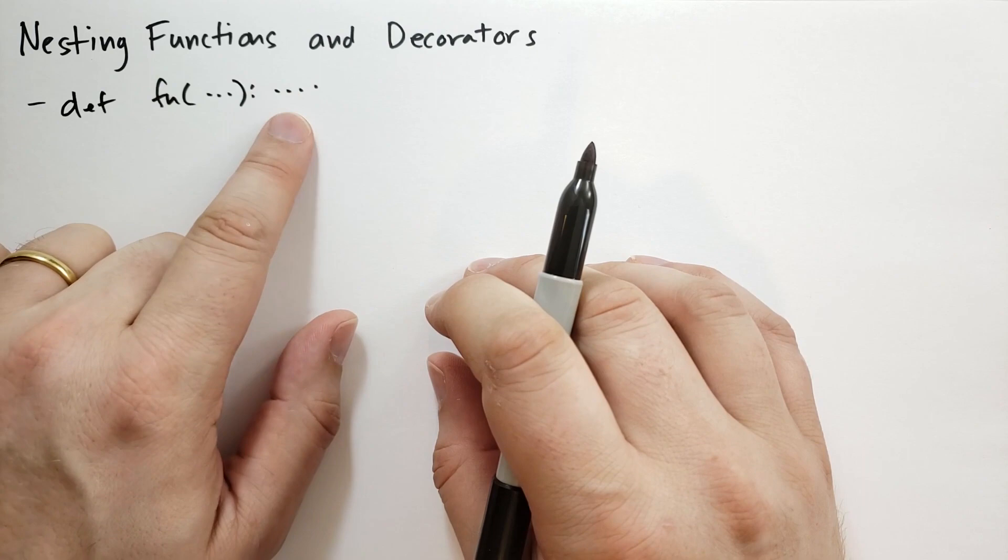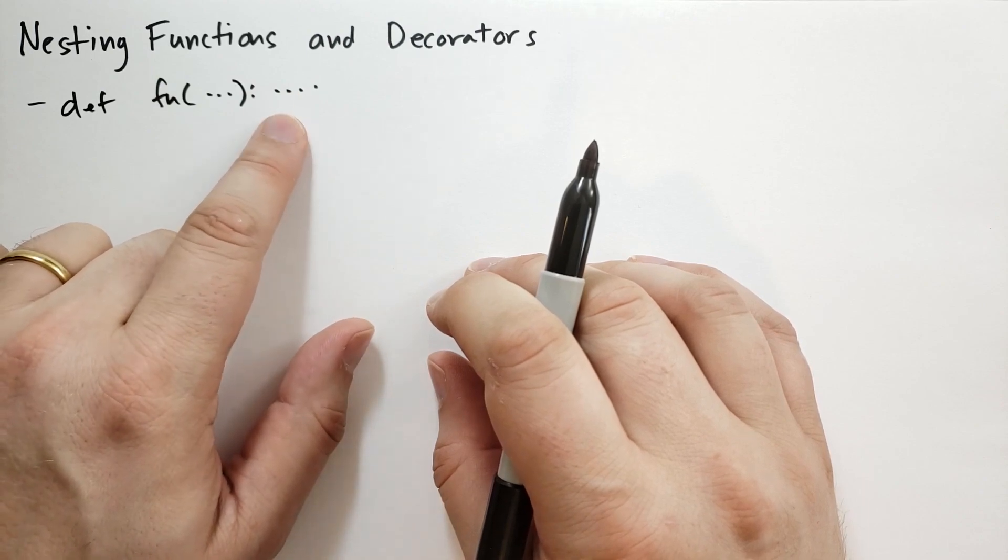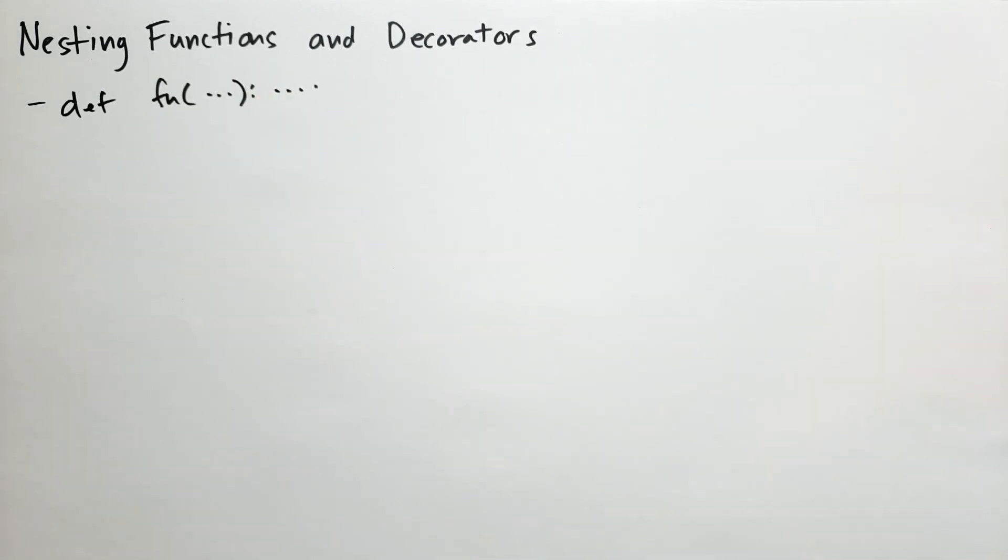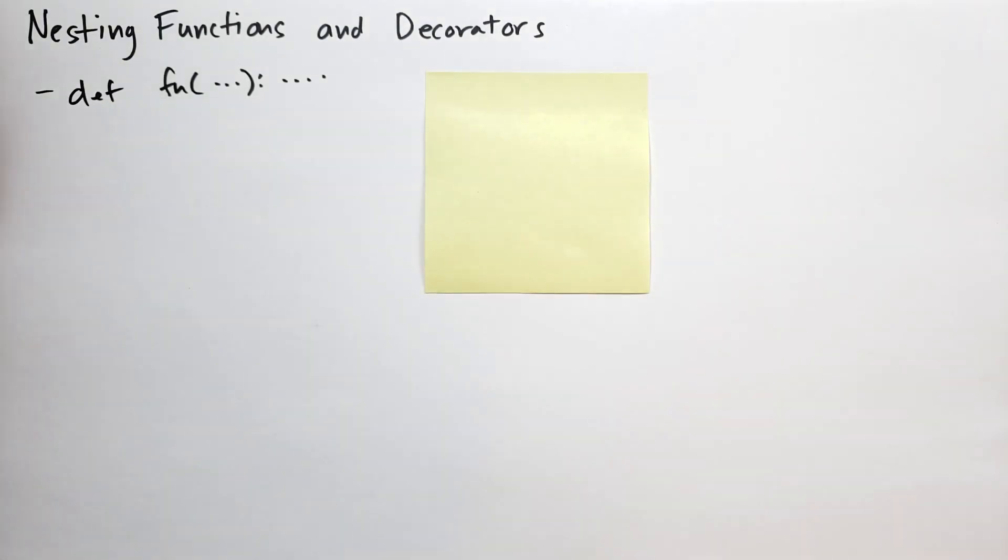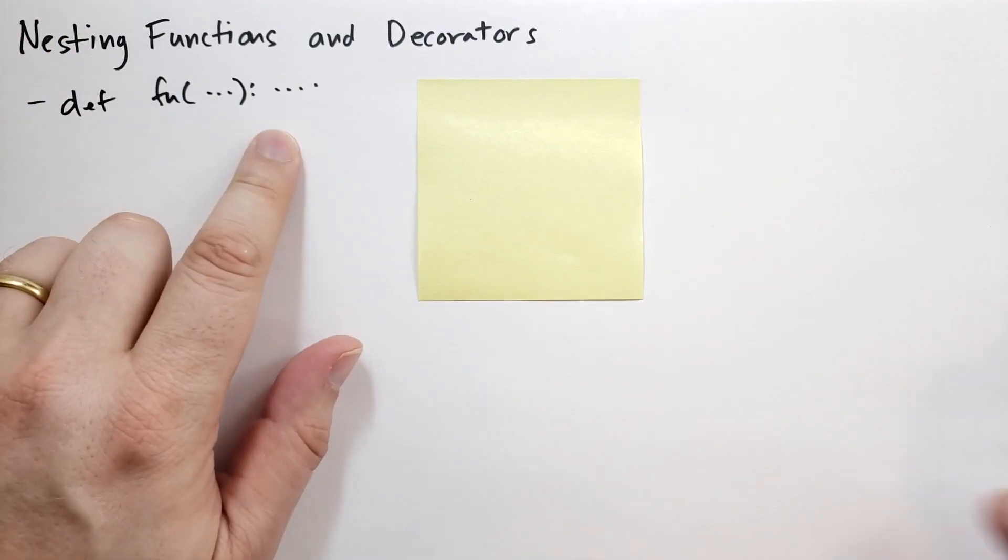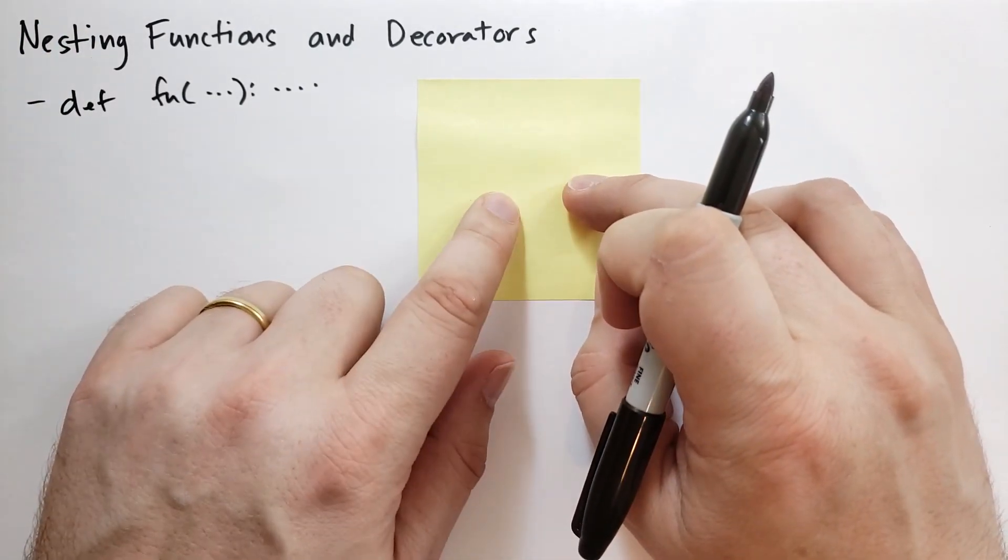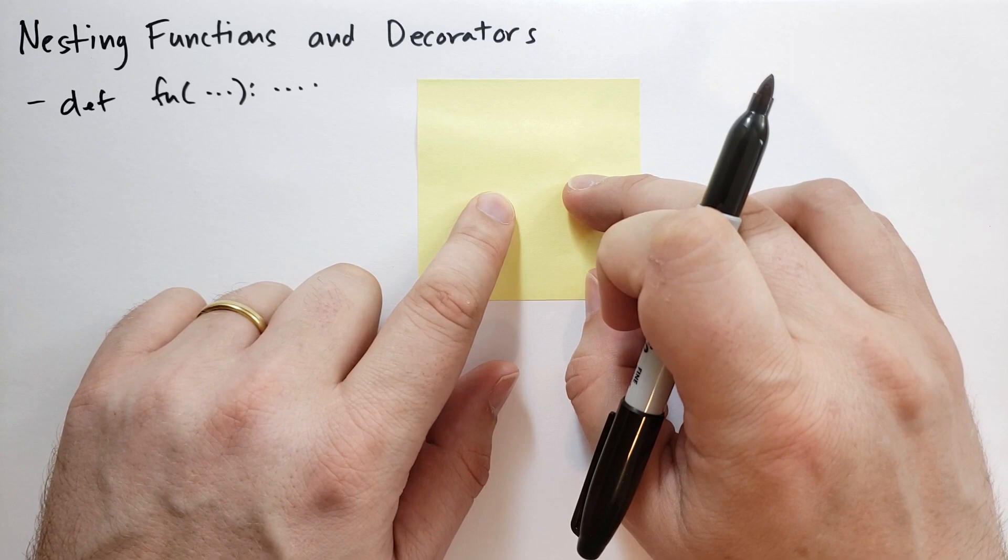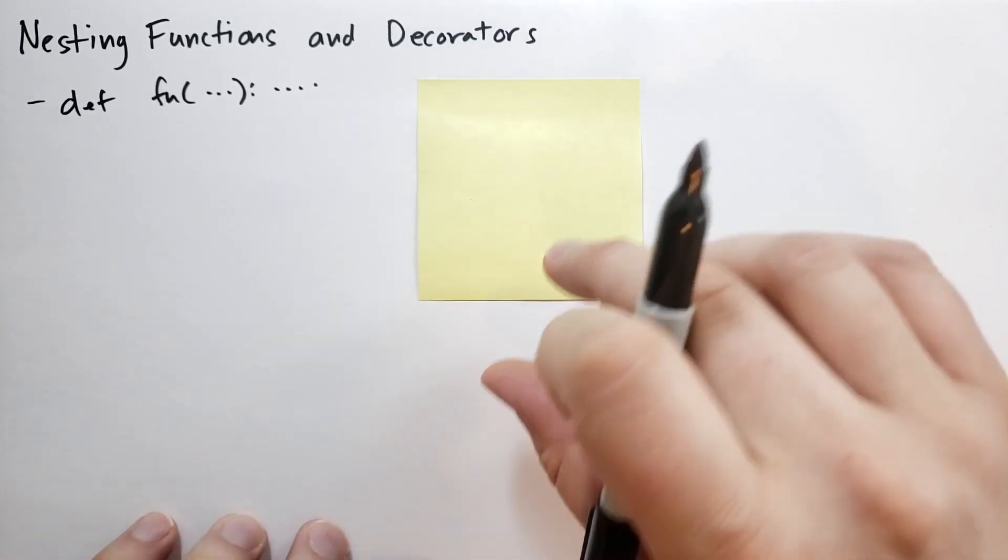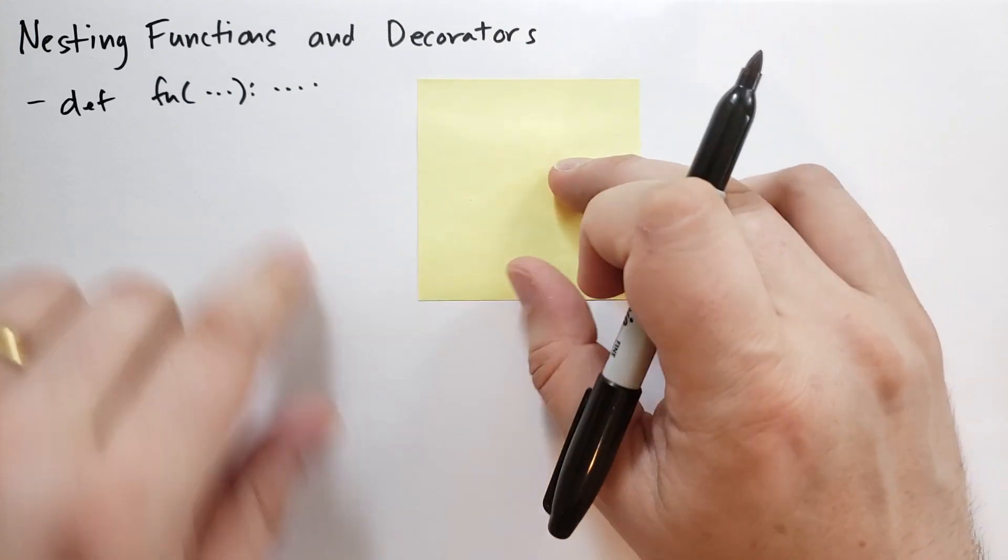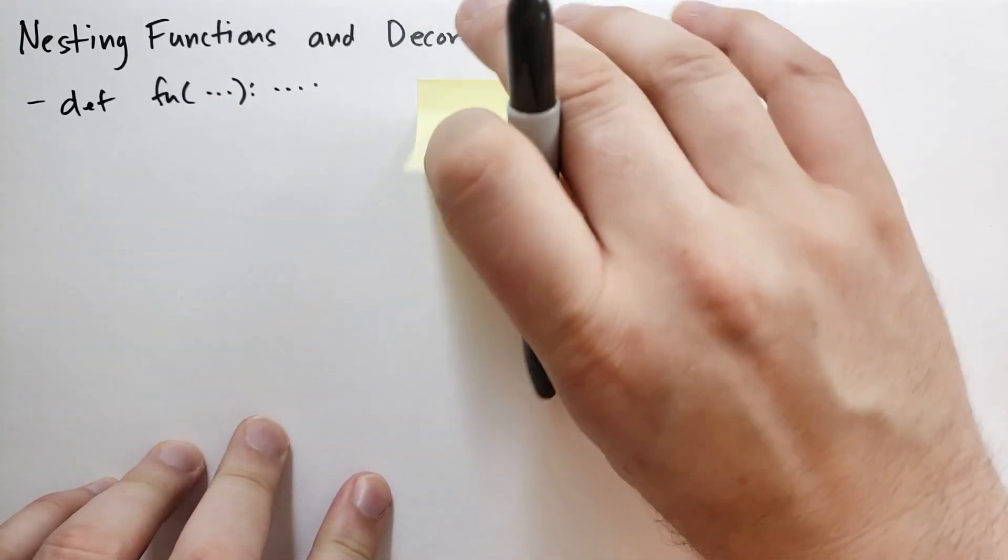The body of the function is executed when the function is called with a new namespace that I'm going to use this yellow sticky to represent. So every time you call a function, you create a new namespace for the local scope of that function, and that code is executed accessing the variables from that namespace. And when the code runs out or when it hits a return statement, then it returns the return value of the function, which if the code runs out, the return value is just none.